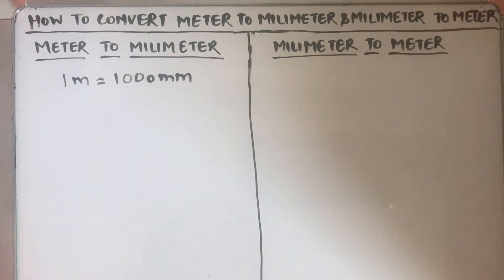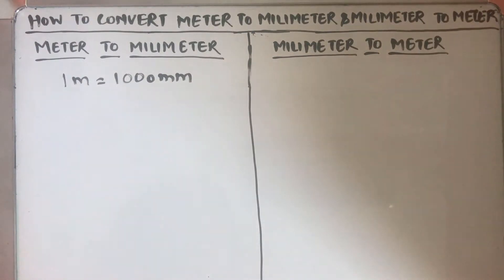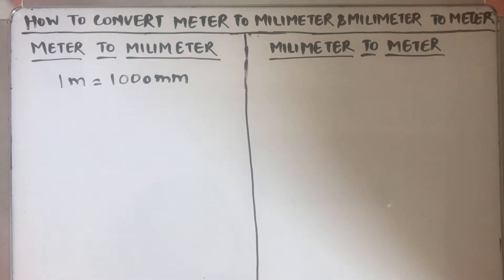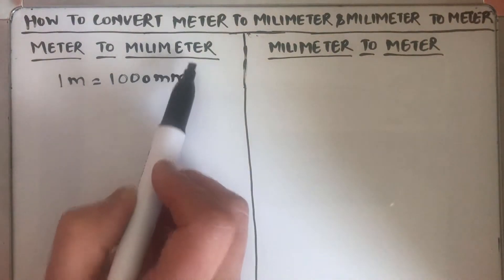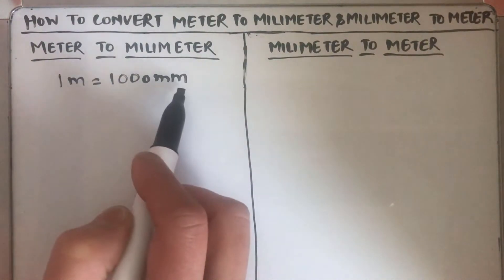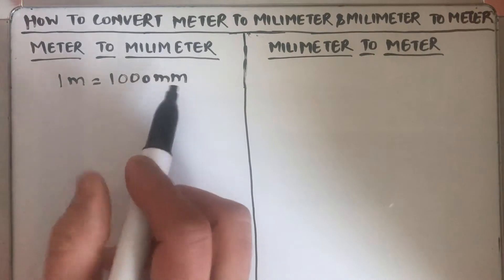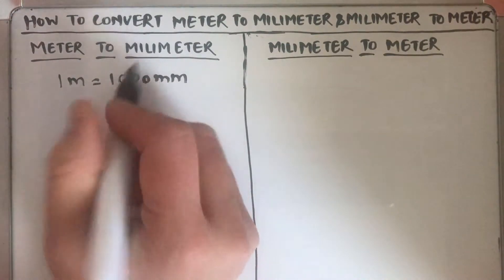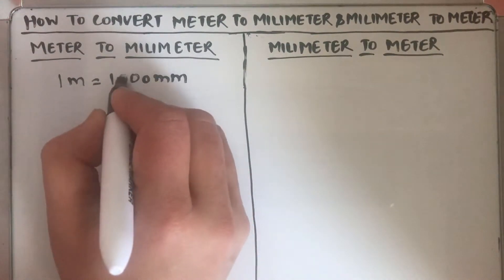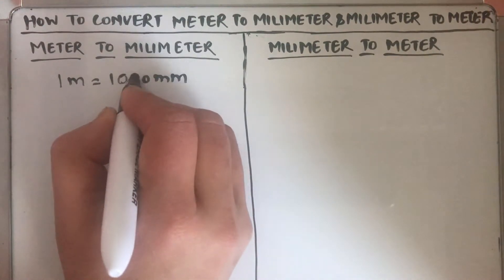Hello viewers, today we are going to learn how to convert meter to millimeter and millimeter to meter. For this we should know the basic relation between meter and millimeter, which is one meter is equal to thousand millimeters. So first we learn how to convert from meter to millimeter.